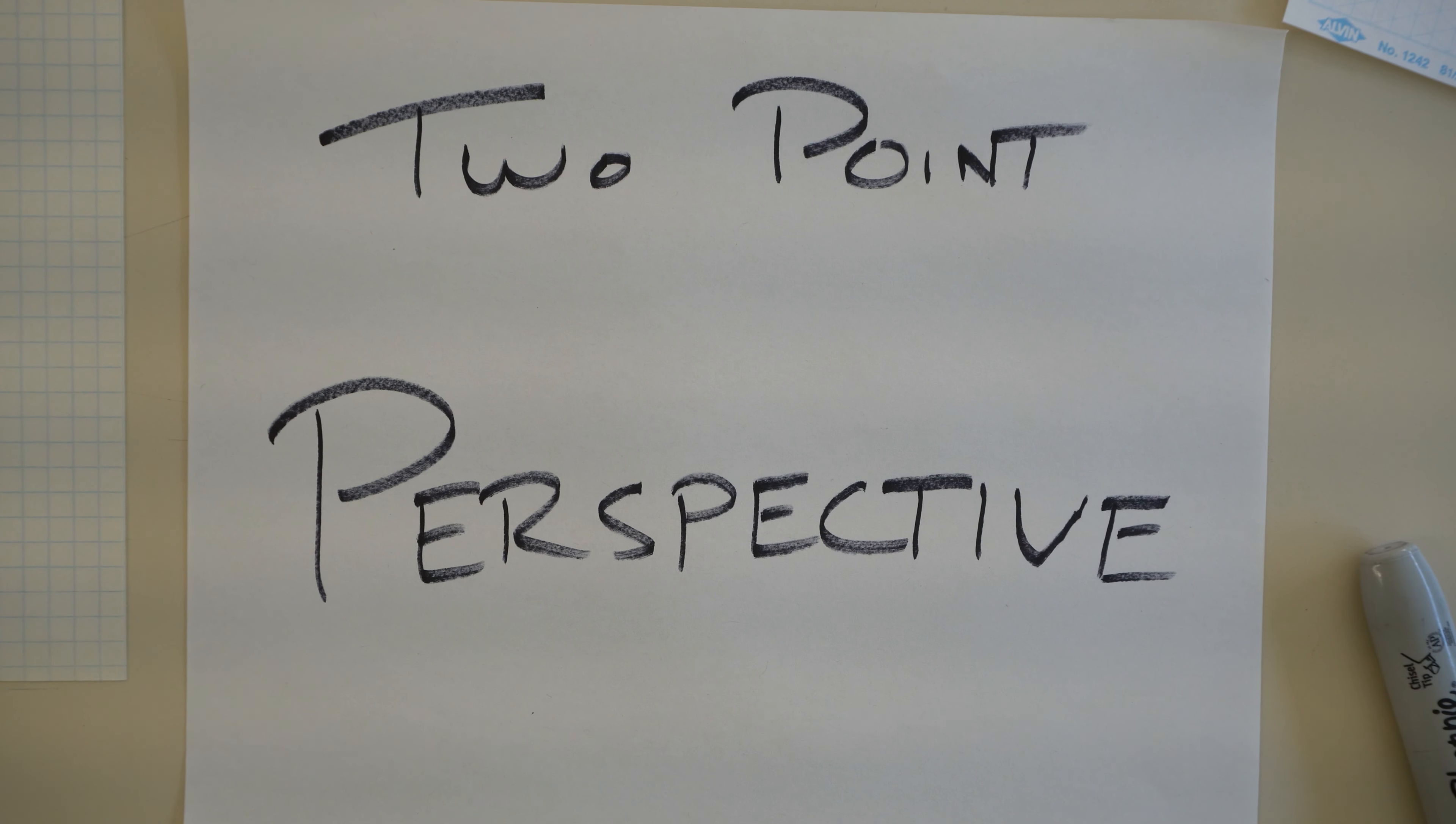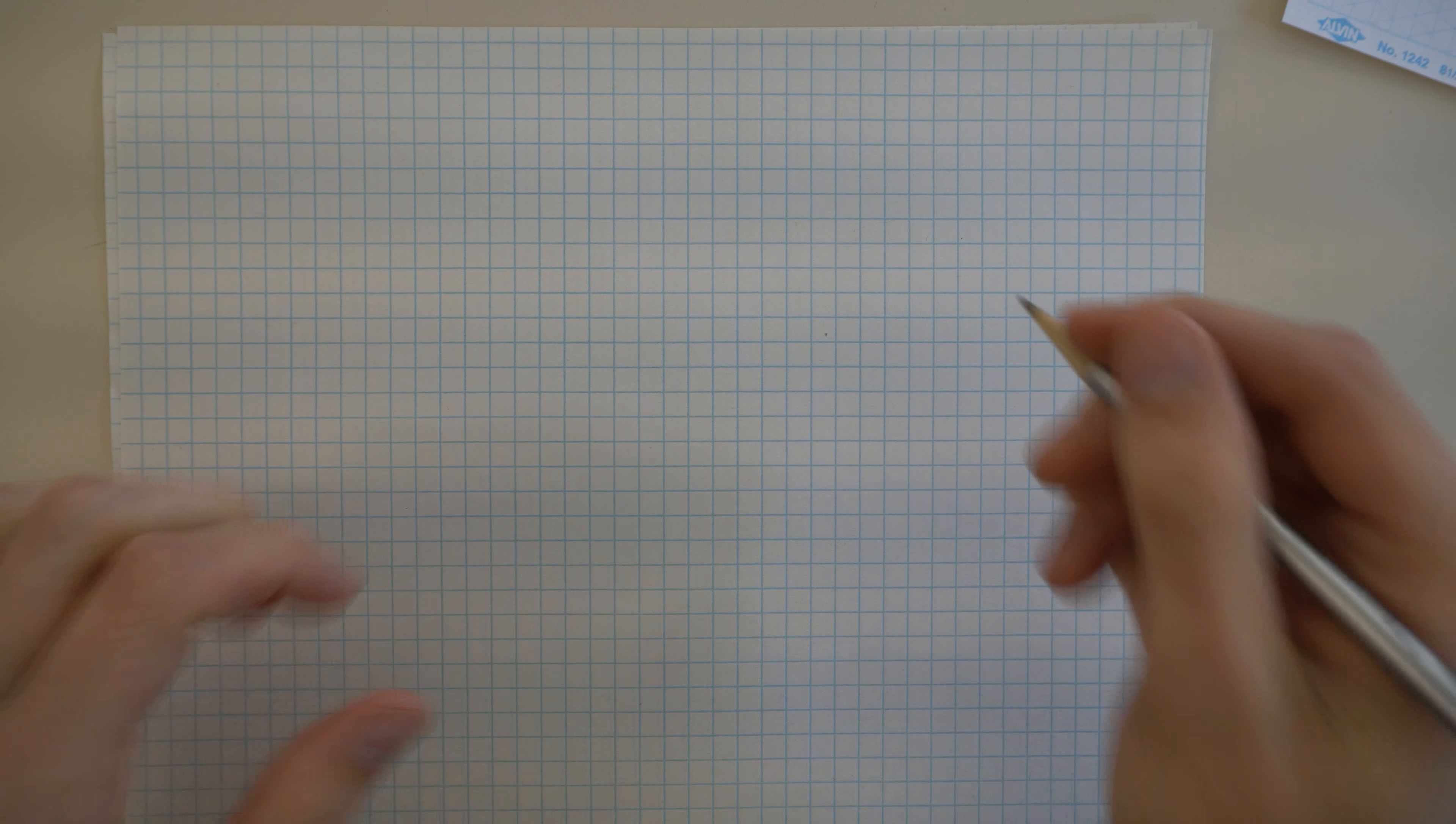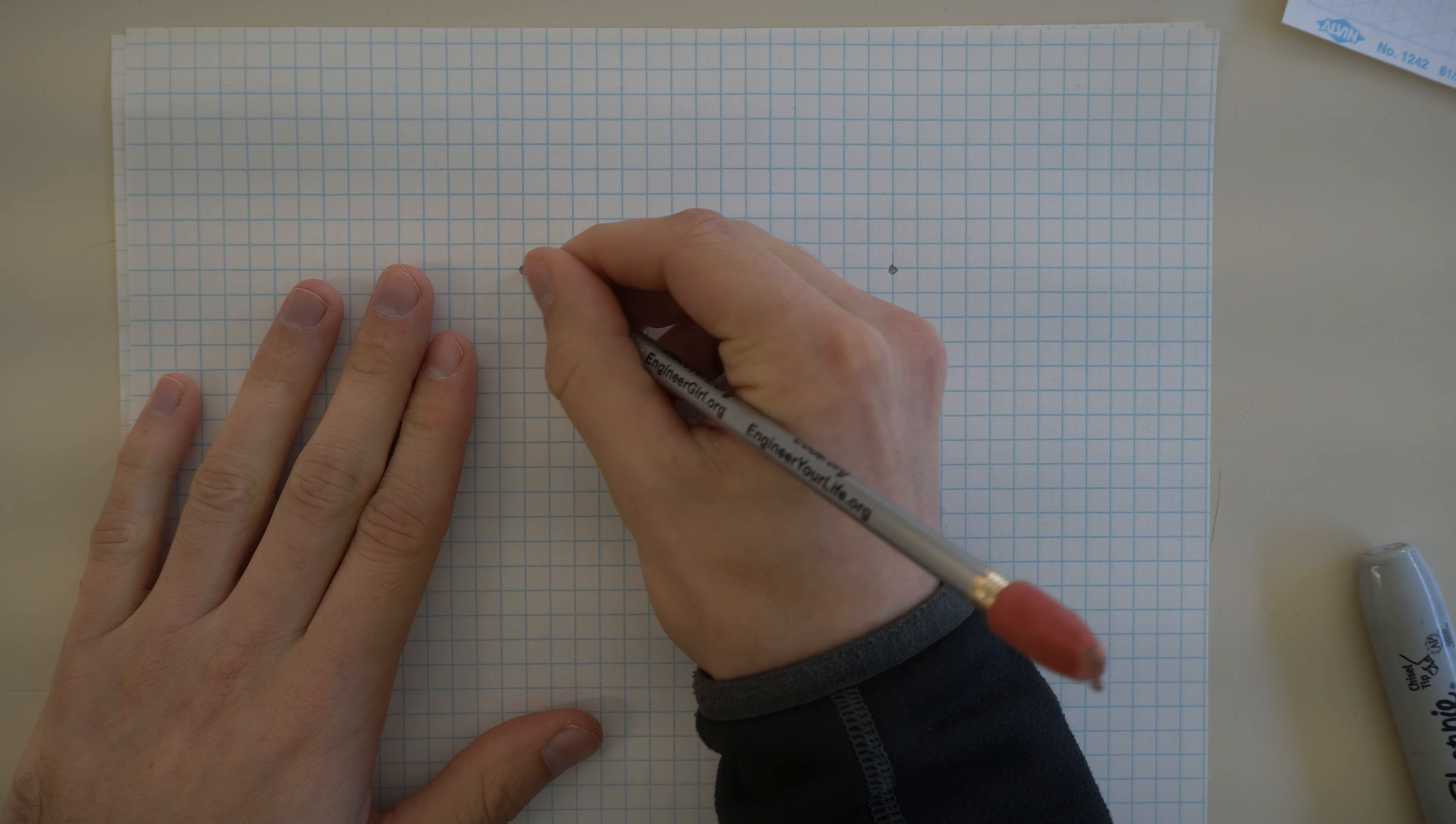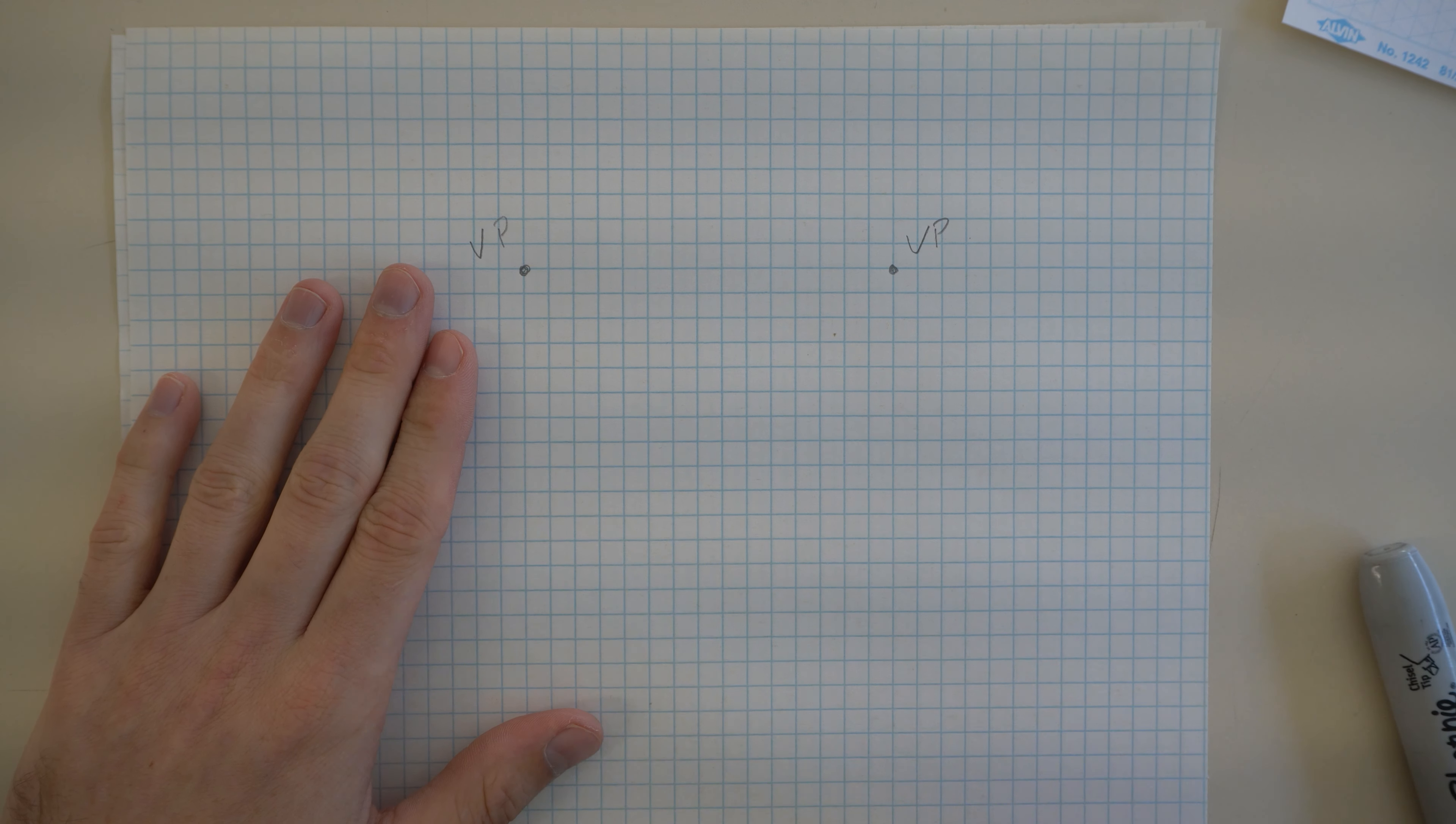Alright, so we're going to be doing some two-point perspective. For two-point perspective drawing, we're going to be using two vanishing points. You have a vanishing point here and a vanishing point here. They could be anywhere.